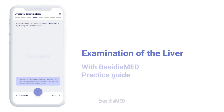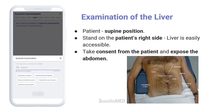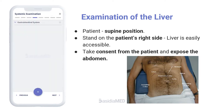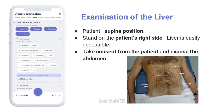Examination of the liver. Abdominal examination is ideally performed with the patient in supine position. Stand on the patient's right side so that the liver is easily accessible. Take consent from the patient and expose the abdomen.